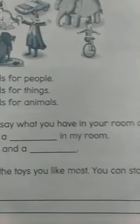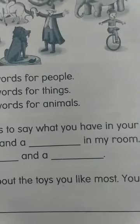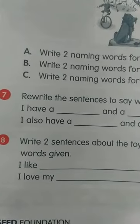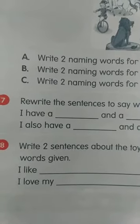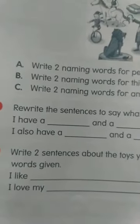Question seven: Rewrite the sentences to say what you have in your room at home. The answer can be your own. I have a bed and a chair in my room. I also have a doll and a ball, and many other things you can write. Write two sentences about the toys you like most. You can start with the words given. Answers can be different. I like my new teddy bear, new fridge, new TV, new computer. I love my toys — that's a great answer.